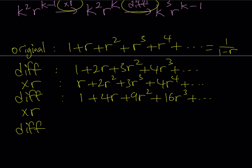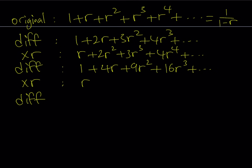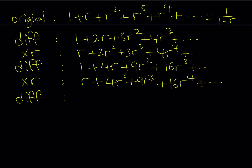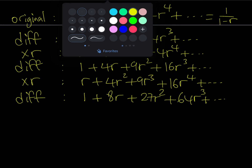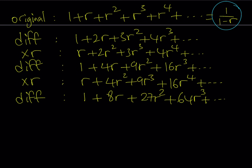Now multiplying by r gives r plus 4r squared plus 9r cubed plus 16r to the fourth, and so on. Then we differentiate one more time — this is the last step. Differentiating r gives 1, this gives 8r, this gives 27r squared, plus 64r to the third power — and 64 is 4 to the third power, so it fits the pattern. We've confirmed the pattern. Now we apply each of these five steps to our original expression s equals 1 over 1 minus r.